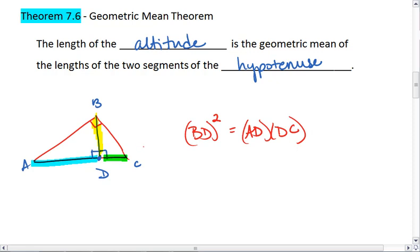For example, if I told you that my two parts were, let me think of numbers real quick. Perhaps I have 12 here, and we'll say that the altitude is actually 18.